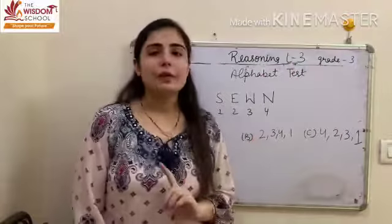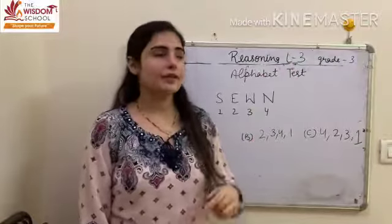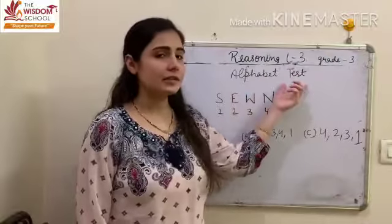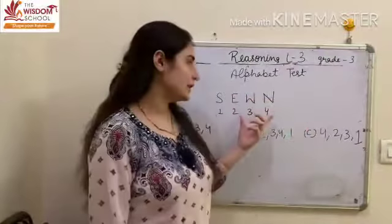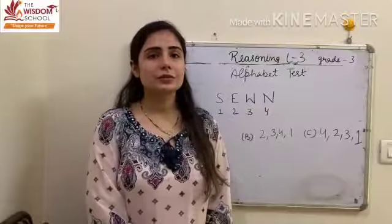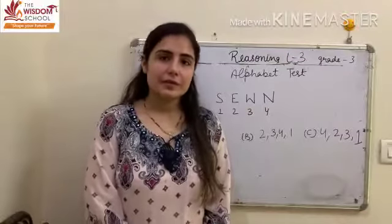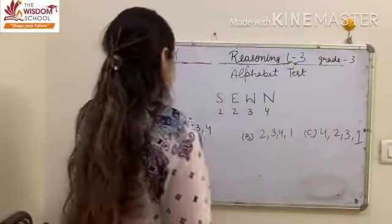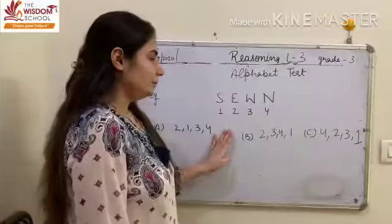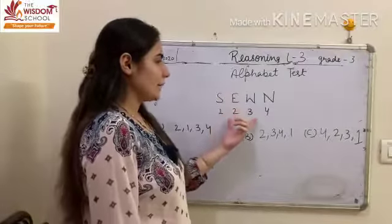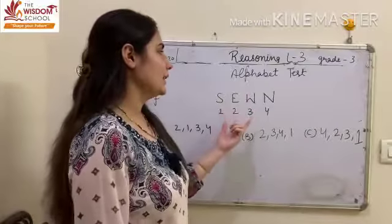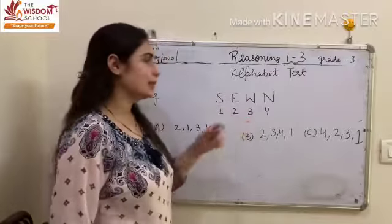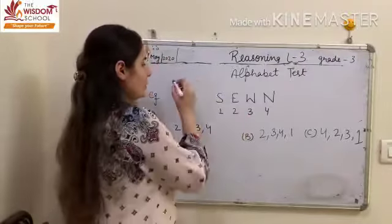So today we will do one type of question based on alphabet test and when you will learn this type, then we will do some questions based on it in our worksheet. So children, this is the example I have taken. This type of questions you will get in your reasoning book. This is the type 1 of question.